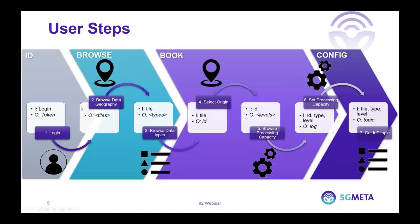In more detail, we can see this sequence using the different APIs with their inputs and outputs, in order to have an IoT topic where we can read or write messages. The first step is that the developer needs to get a token to access the platform from their credentials. Once we have this token, the developer gets the set of locations where data is being produced using tiles. A tile is a rectangular area that comes from a standard. Once the tile of interest is identified, the developer needs to get the data types available in that specific area — for example, in the area of Madrid.